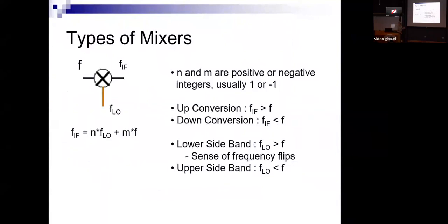Mixers are the more complicated components in a radio telescope. It's similar to beating in basic physics — you have two frequencies that beat together. For example, something at 1600 Hz and something at 1500 Hz: what you hear is not just those frequencies but the difference between them. That's what mixers are essentially doing in radio telescopes. You have a frequency coming in from the sky or from further up in the chain. You have a synthesizer producing a pure tone called the local oscillator frequency. The mixer produces the difference or the sum of these two frequencies.